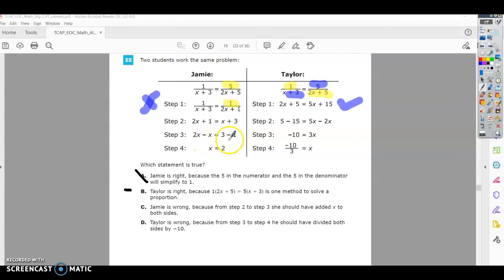In step two, they actually subtracted x from one side and subtracted 1. So all they did was basically move the variable to the same side and the numbers to the same side. These steps are okay, not probably the way I would do it, but not wrong.